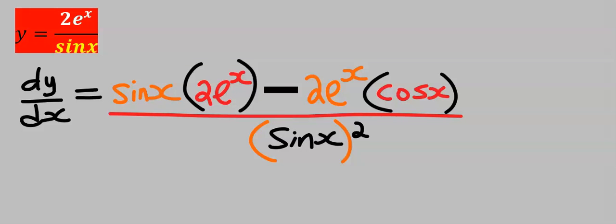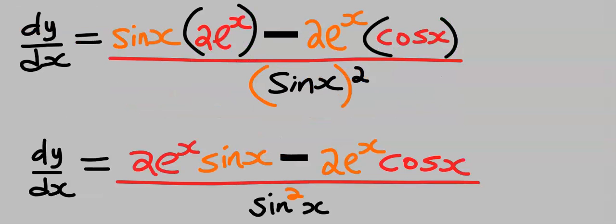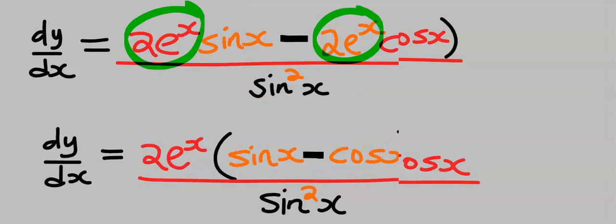Next is to simplify our result. Open up the brackets, then factorize 2e^x out, and this becomes our dy/dx.